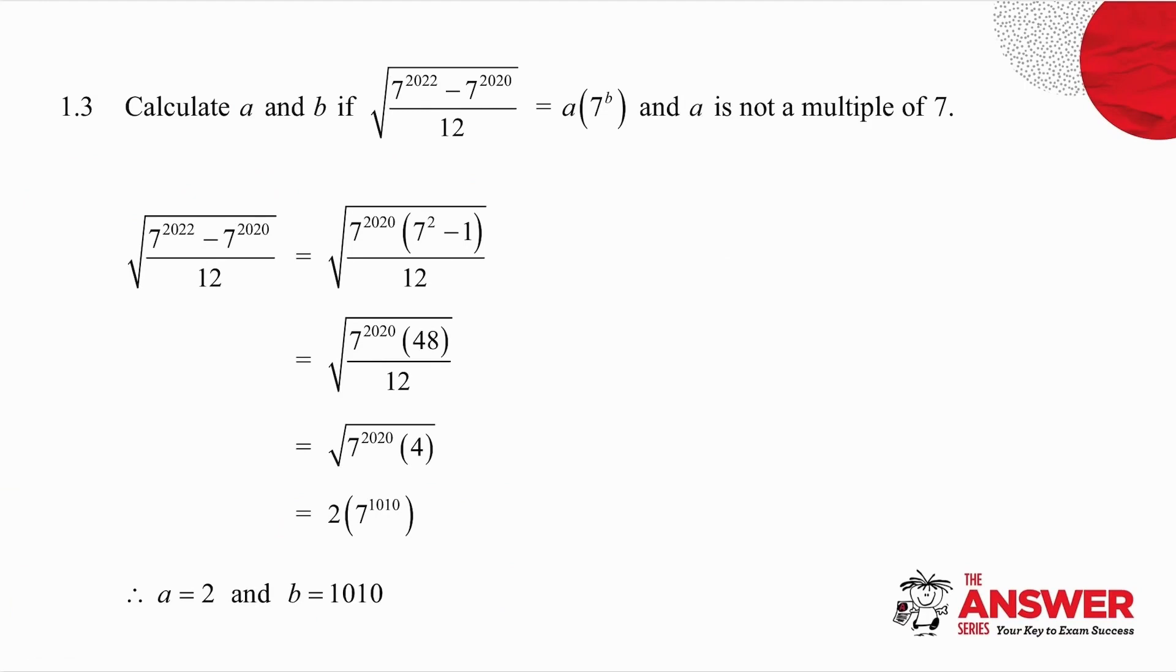Number 1.3. This one looks daunting. So you've got two terms on the top. I'm going to take out a common factor. And I'm going to take out the common factor with the one that has the smaller exponent. Remember, when you multiply, you add your indices. So what must I add to 2020 to get to 2022? I must add 2. So that becomes a 7 squared. 7 to the 2020 into itself goes 1.